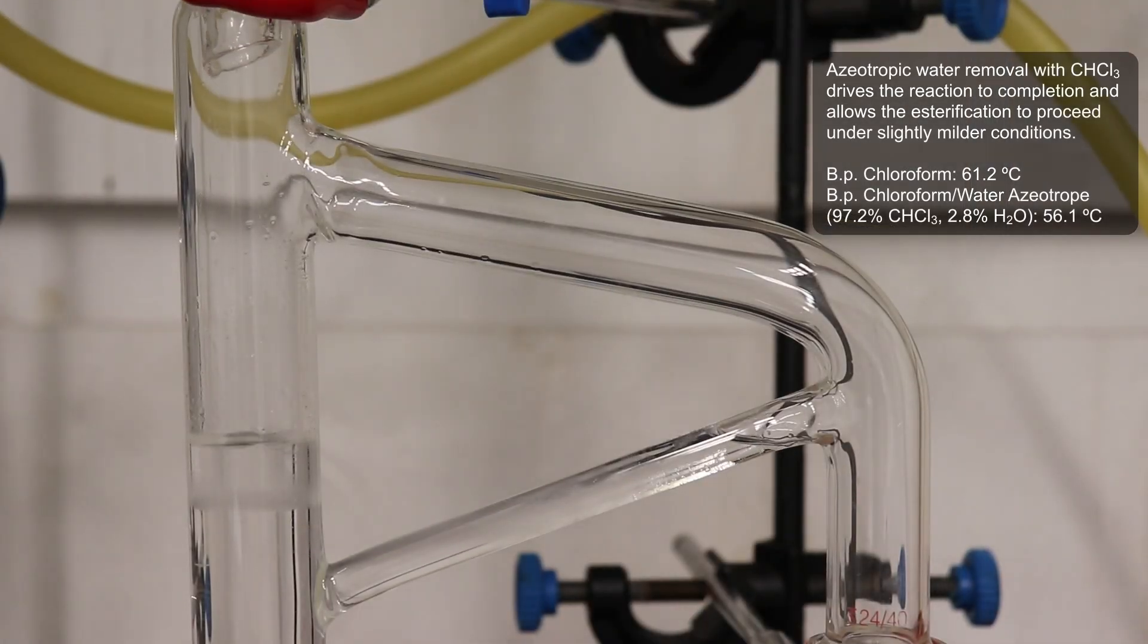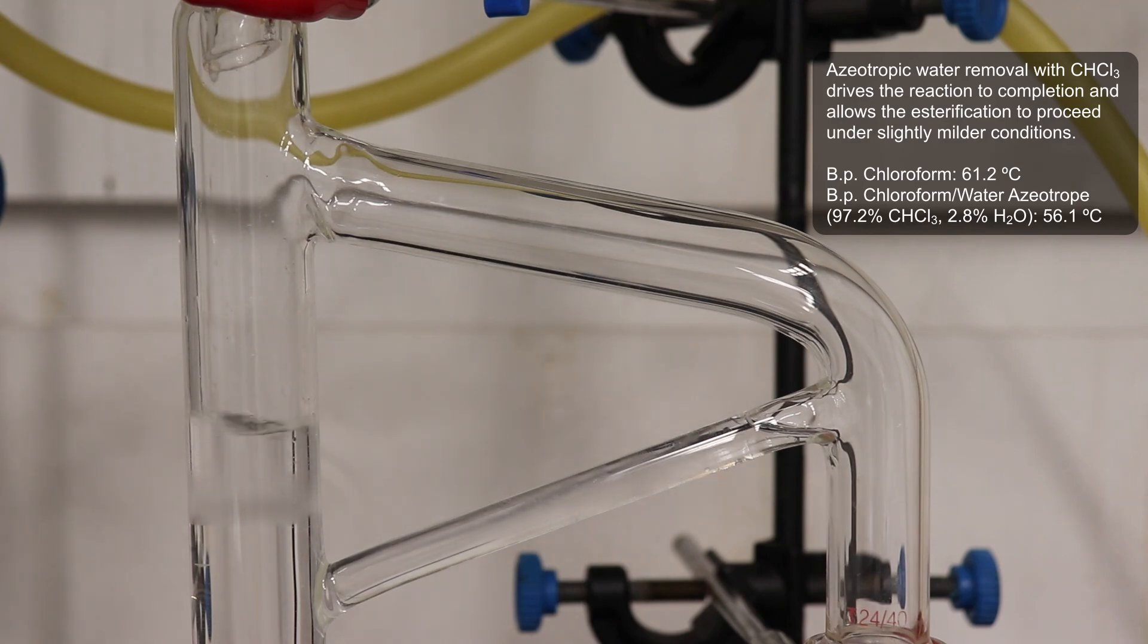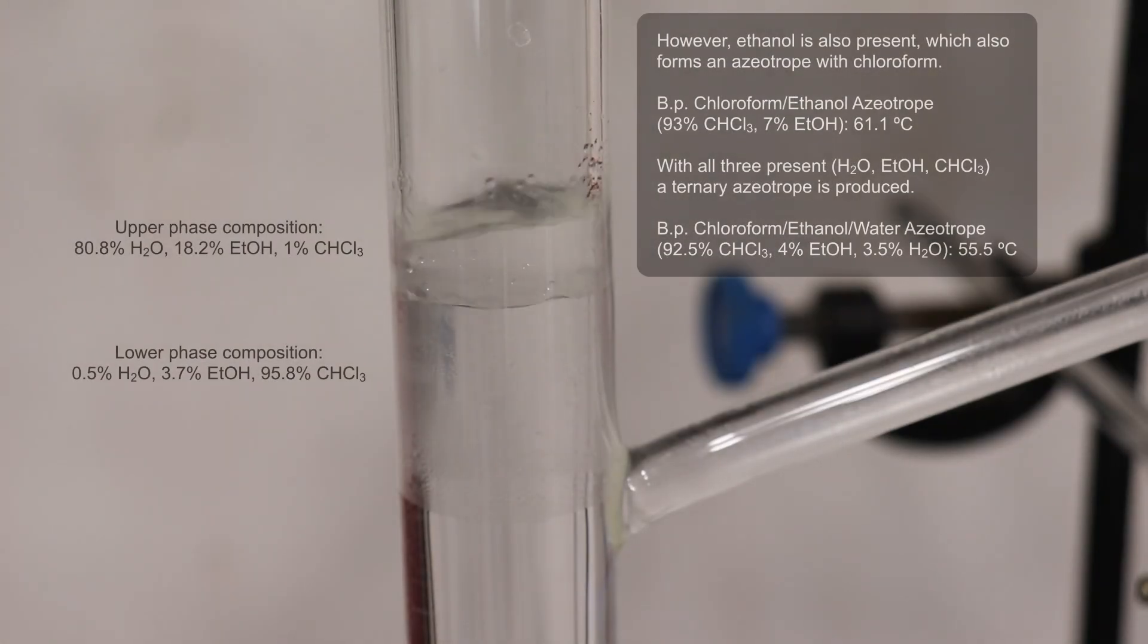The use of chloroform as the solvent is critical to this process. Chloroform and water form a low-boiling azeotrope, and so water and chloroform will co-distill with each other, and once these vapors reach the condenser, they'll return back to being a liquid and undergo phase separation,